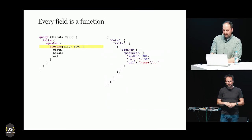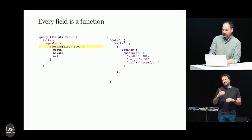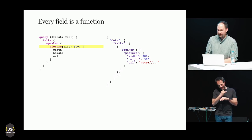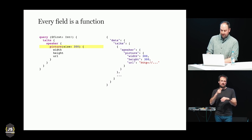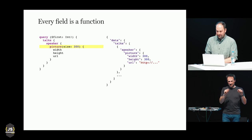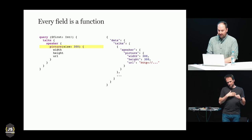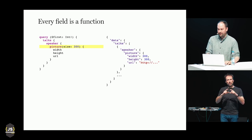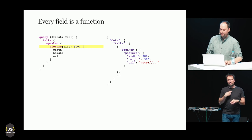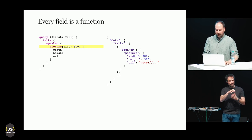There are a few additional GraphQL features I want to talk about. The first is that every field in GraphQL is a function, and any field can take arguments. For example, I added a picture field on the speaker which accepts a size argument. In your server implementation, you can write a function called a resolver to compute what the result of the field should be, which gives you a lot of flexibility when defining your API.